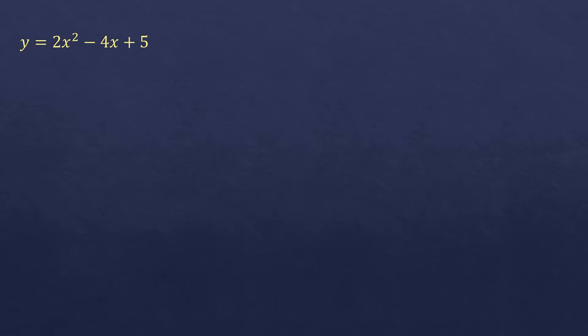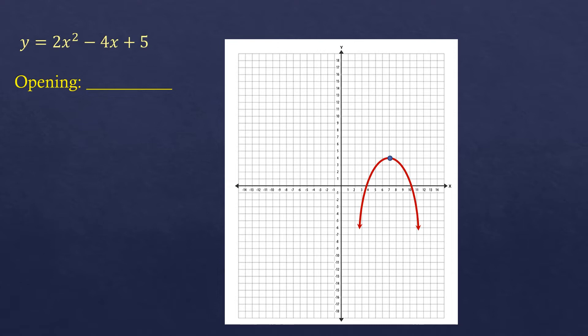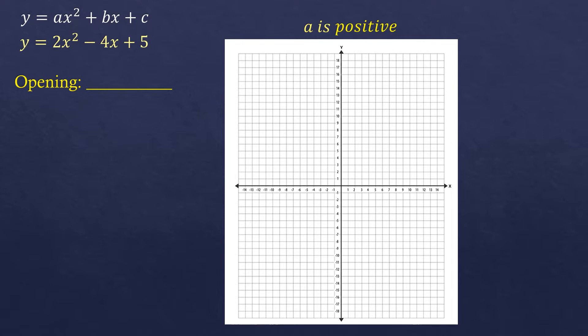We're going to start by knowing the opening of this quadratic function. We have a Cartesian plane, and we want to know if the graph opens upwards or downwards. Let's review the standard form of the quadratic function, which is y or f(x) equals ax squared plus bx plus c. If 'a' is positive, the graph opens upwards. We don't know yet where it is located, but we know it's opening upwards.